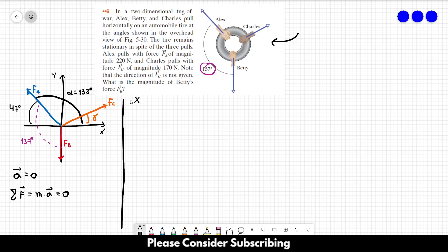So let's analyze the x-component first. So in the x-direction, we have the x-component of FC, which is FC cosine of gamma, plus the x-component of FA, which is FA cosine of alpha. Minus FB, because FB points downwards. So we want this value to be positive. So we have to introduce the negative sign over here. So we have this system of two different equations.